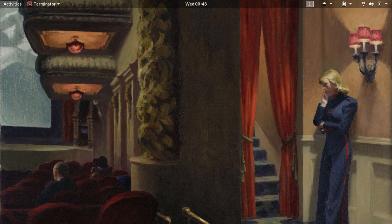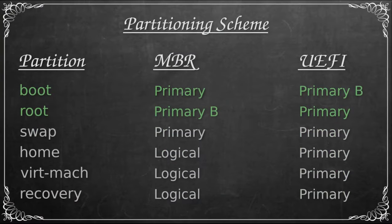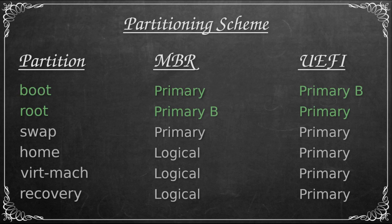So today I'll be creating six different partitions. The first one will be boot, the second root, third swap, fourth home, fifth for virtual machines, and lastly we have recovery for all the system snapshots. One of the differences between master boot record and UEFI is that you'll only be able to create four primary partitions using master boot record, after which the remaining ones will need to be logical. Seeing as we'll be creating six today, the fourth partition and the ones following that will all be logical.